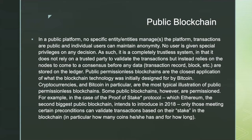Bitcoin and cryptocurrencies in particular are the most typical illustration of public permissionless blockchains. Some public blockchains, however, are permissioned — for example, in the case of proof-of-stake protocols, which Ethereum, the second biggest public blockchain, intended to introduce. In that model, only those meeting certain preconditions can validate transactions based on their stake in the blockchain — that is, how many coins they hold and for how long.